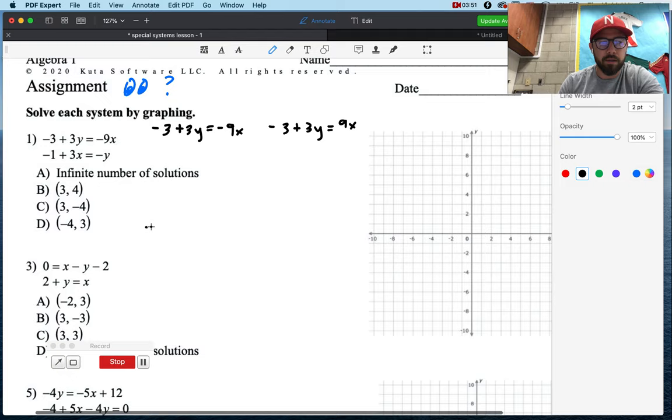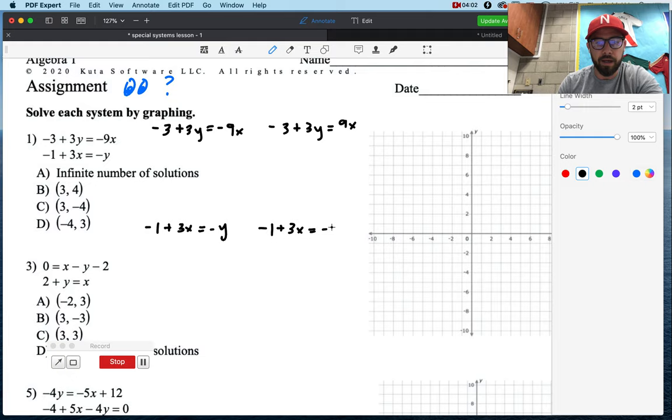Can I slide my doc over? Yes, I can. Now, when we use the intercepts method, I like to write each question twice. So, let's write this first one, negative 3 plus 3y equals negative 9x. And we're going to write that again, negative 3 plus 3y equals negative 9x.